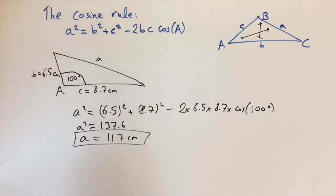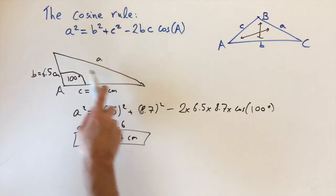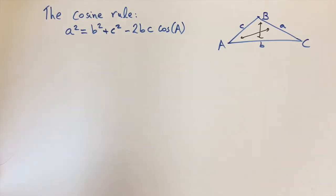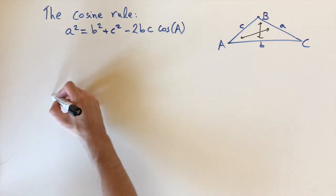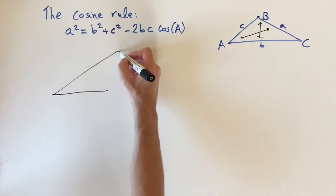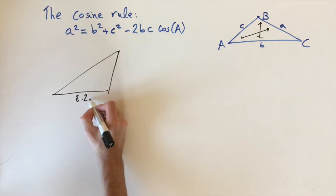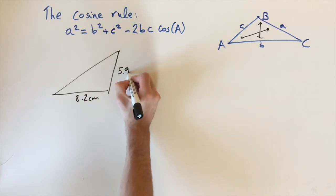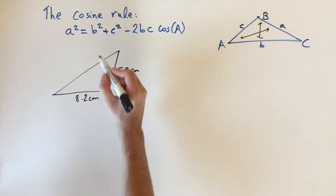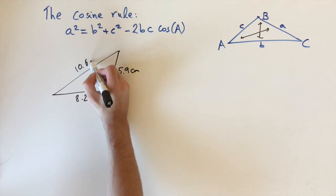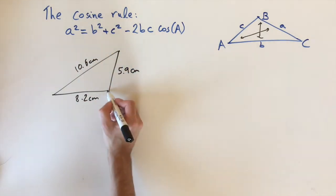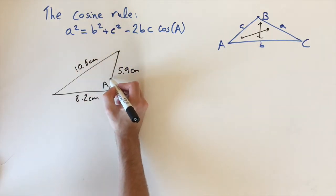Now we're going to look at an example where we're given the three sides but we need to find a missing angle. For this problem, we're given three sides: this one is 8.2 centimeters, this one is 5.9 centimeters, and the longest one is 10.6 centimeters. The question is to find this missing angle here, which I'll call capital A.